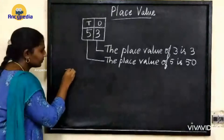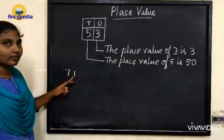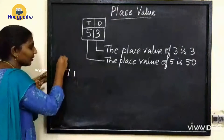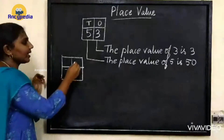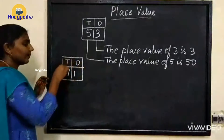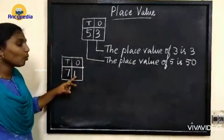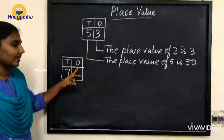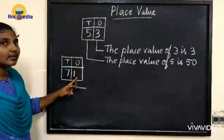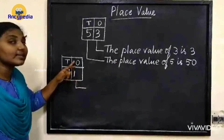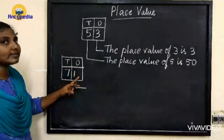Okay next 71. This is also a two digit number. First split the number into two parts and mention their places. We have 1 in 1's place, so the place value of 1 is 1 because it is in 1's place.